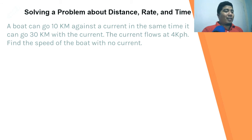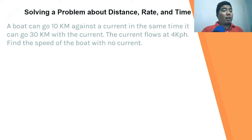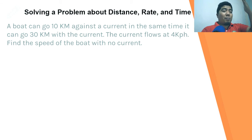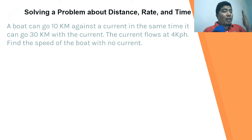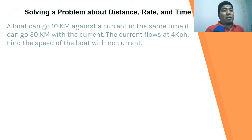A boat can go 10 kilometers against a current and 30 kilometers with the current in the same time. The current flows at 4 kilometers per hour. Find the speed of the boat with no current. Imagine the situation: going upstream means the current works against the boat, so it covers less distance; going downstream, the current helps, so the boat is faster.